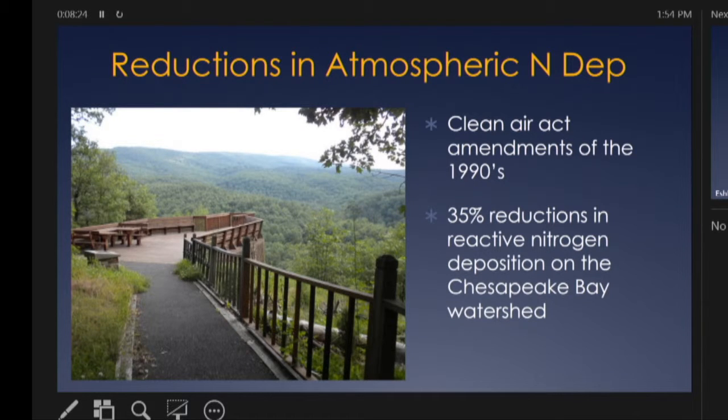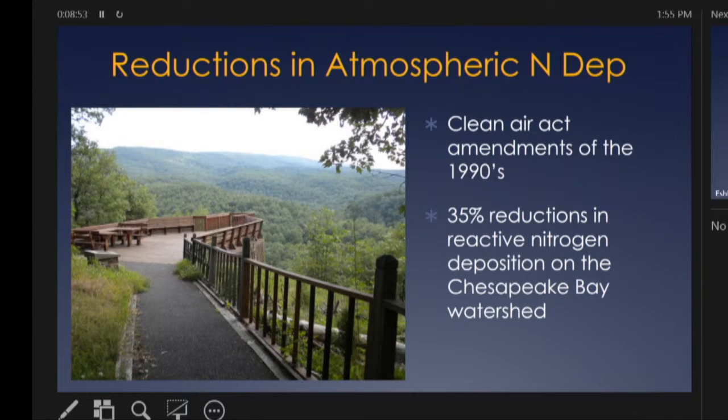Interestingly, we have the Clean Air Act, and in the 1990s we doubled down with amendments and other legislation to regulate acid rain. Part of acid rain is nitric acid, which has nitrogen in it, which comes out in streams. Since the early 2000s, we started seeing major reductions in the amount of deposition. Across the entire Chesapeake Bay watershed, we have a 35% reduction in nitrogen deposition, which is really reducing the amount of nitrogen coming out of these forested watersheds.